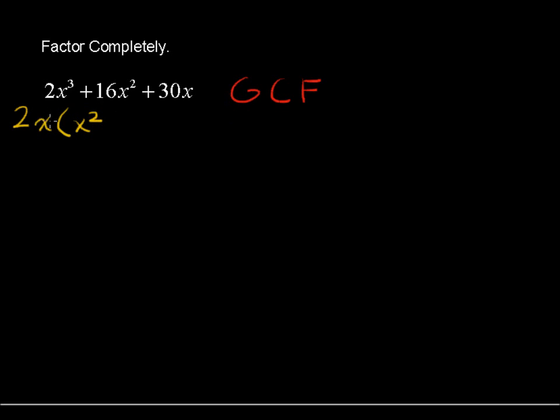What would you have to multiply by 2x to get 16x squared? That would be 8x. 2x times 8x is 16x squared. And what would you multiply by 2x to get 30x? That would be 15.